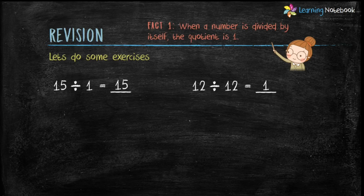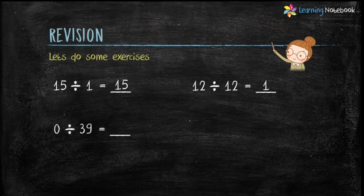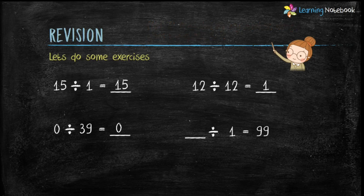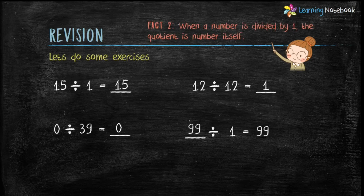When a number is divided by itself, the quotient is 1. Now third is, 0 divided by 39 equals 0. It is based on fact number 3 — 0 divided by any number, the answer will always be 0. Now fourth: blank divided by 1 equals 99 — answer is 99. It is based on fact number 2, when a number is divided by 1, the quotient is the number itself.